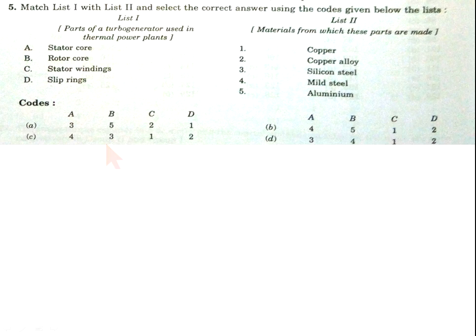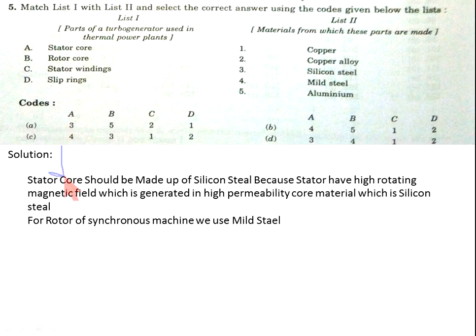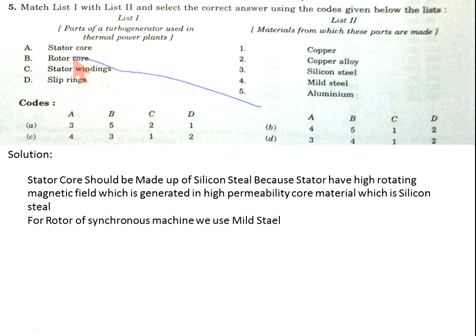Question number 5: match list 1 and list 2. Stator cores should be made of silicon steel because the stator has a high rotating magnetic field generated in high permeability core material, which is silicon steel — so A is connected with 3. Rotor core is made of mild steel — connected with 4. Stator winding should be of copper — connected with 1.